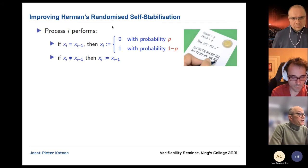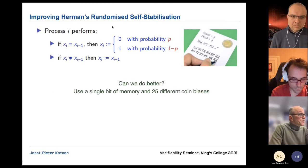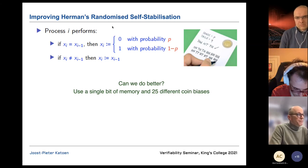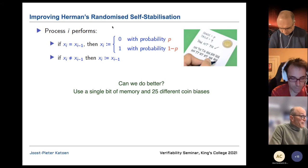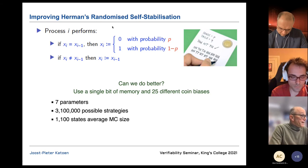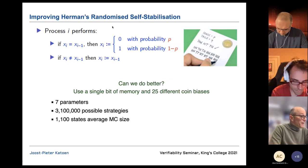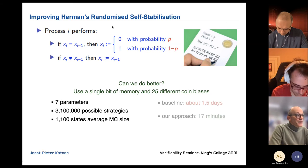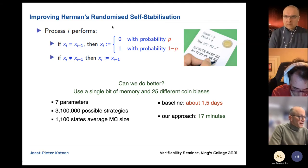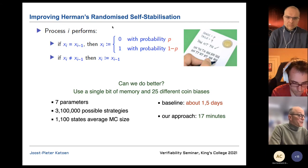The same framework applies to randomized self-stabilization. Hermann's original protocol uses no memory and a fixed coin bias. By adding a single memory bit and choosing between different coin biases, you can do better. With 7 parameters and 3.1 million family members of ~1,000 states each, the problem is solved in 70 minutes — improving on the optimal bias found by parameter synthesis alone.